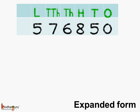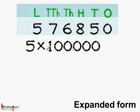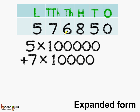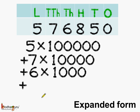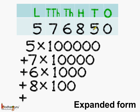Now let us write this number in expanded form. Now that we have placed the number under the place value chart, it becomes very easy. Starting from the lakh position: 5 into 1 lakh, plus 7 into 10,000, plus 6 into 1,000, plus 8 into 100, plus 5 into 10. And the last value is 0, so we can ignore it — you can write plus 0 or ignore it, both are correct.